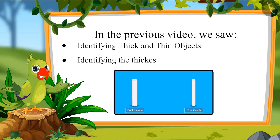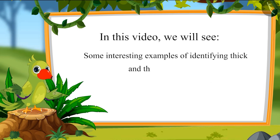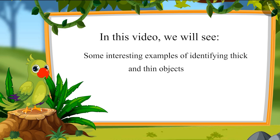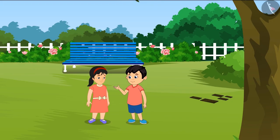And identifying the thickest and thinnest objects. In this video, we will see some interesting examples of identifying thick and thin objects. Shoto and Pinky want to have a swing on the tree behind their house. Pinky, what all do